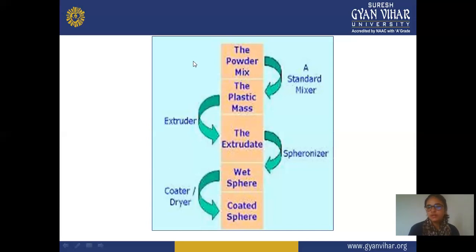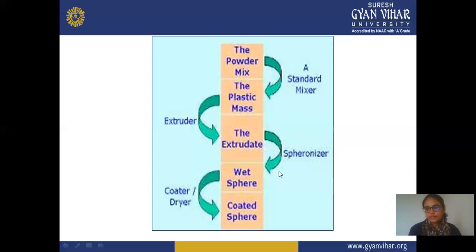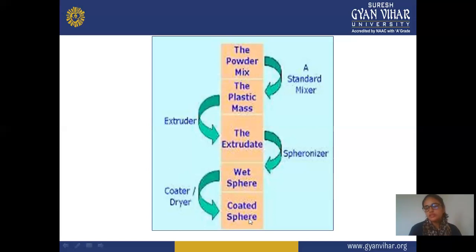In summary: first, take the required powder including API and excipients and mix them. After mixing, a plastic mass is formed and passed to the extrusion machine. After passing through extrusion, the material is extruded out. Then spheronization takes place forming wet pellets containing some moisture. After wet pellets, a coating dryer is used — coating is applied with a polymer or coating material into the pellets. After coating, drying also takes place simultaneously, resulting in final coated pellets.